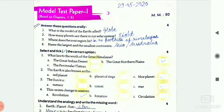Now look at the first question: answer these questions orally. In this question, you can give them orally. I mean, make them in the main group. First one is, what is the model of the earth called? We call it globe.